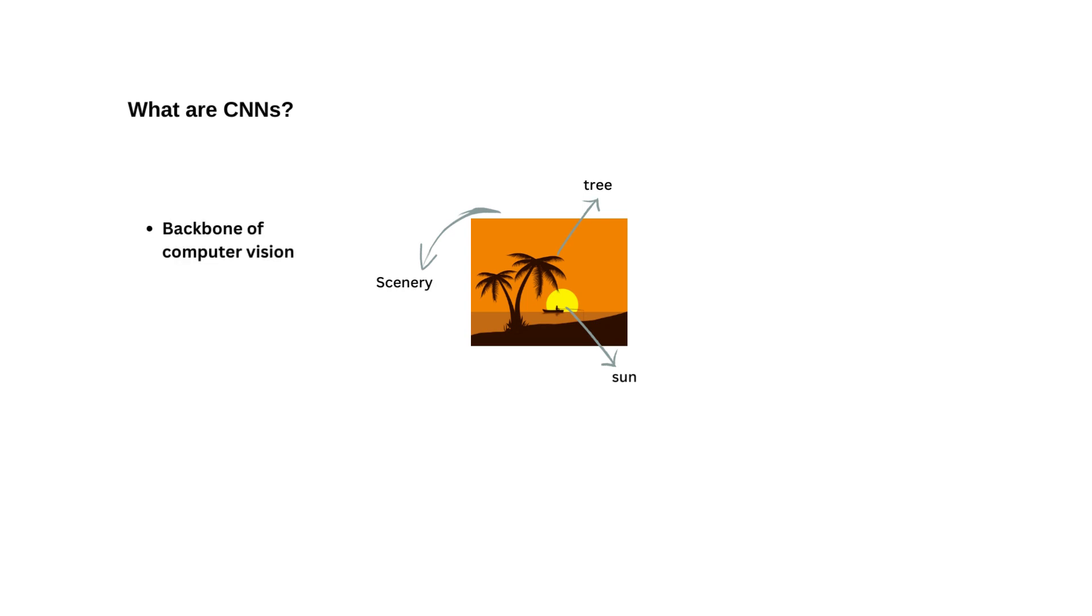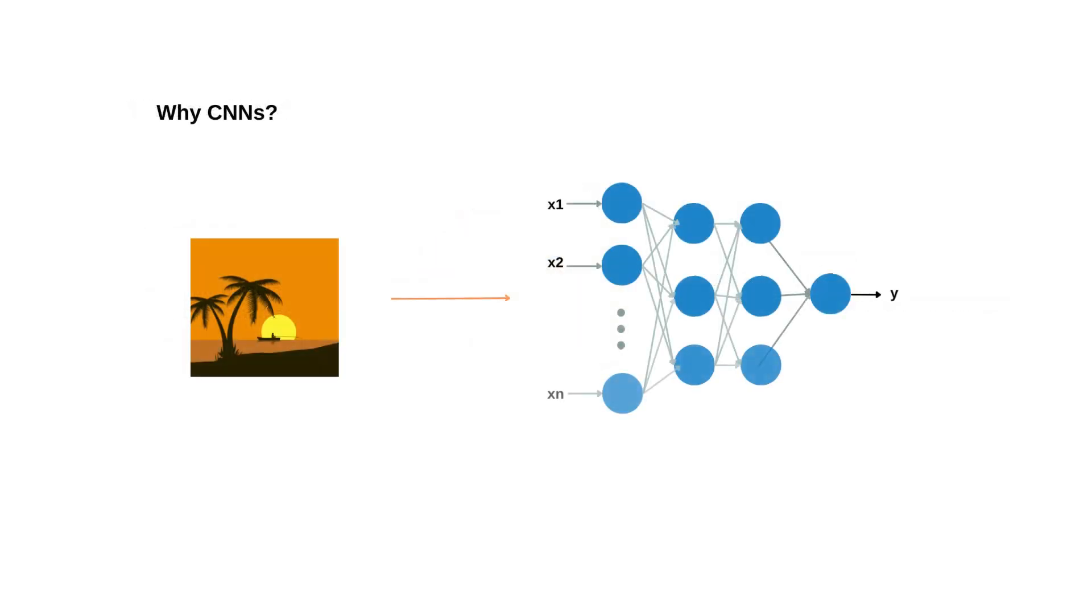Convolutional neural networks are the backbone of modern computer vision because they enable machines to mimic human vision. They can recognize objects, detect patterns and even understand the context within images. But why can't we use our normal neural networks?